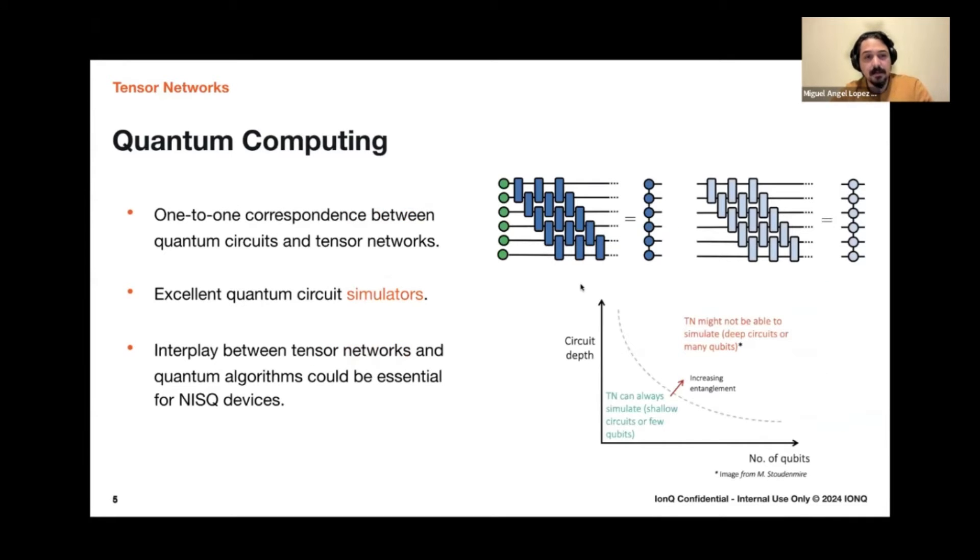And finally, for quantum computing, well, it turns out that there's a one-on-one correspondence between tensor networks and quantum circuits, which means that any quantum circuit can be expressed as a tensor network and vice versa. This means that they are excellent for quantum circuit simulations. And, of course, there's up unto some point that we can do this. And that's how we show this in this graph that we have some interplay between circuit depth and number of qubits. And below this curve, you know, there's where we can always simulate quantum circuits with tensor networks.